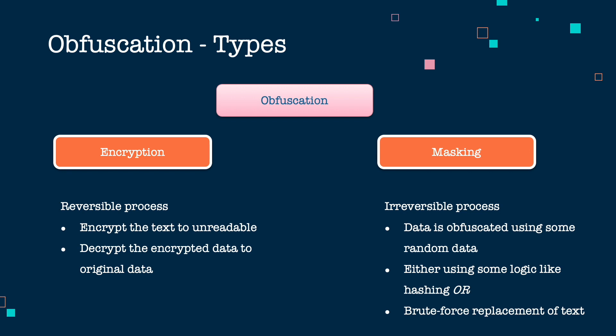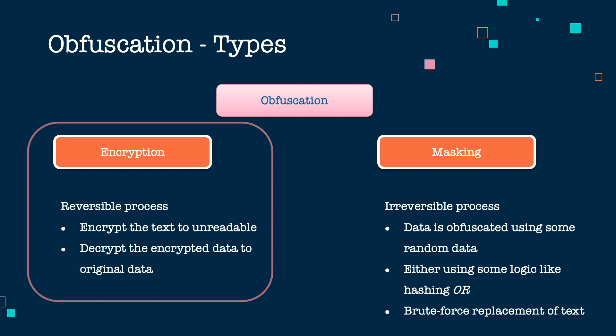Masking is an irreversible process where the data is obfuscated into an unreadable format and we cannot restore it back to its original contents. There are multiple techniques for doing this, like hashing or brute force replacement. Masking-like techniques are generally used when we transfer data from production environments to a testing environment, which is not of real interest in this video.